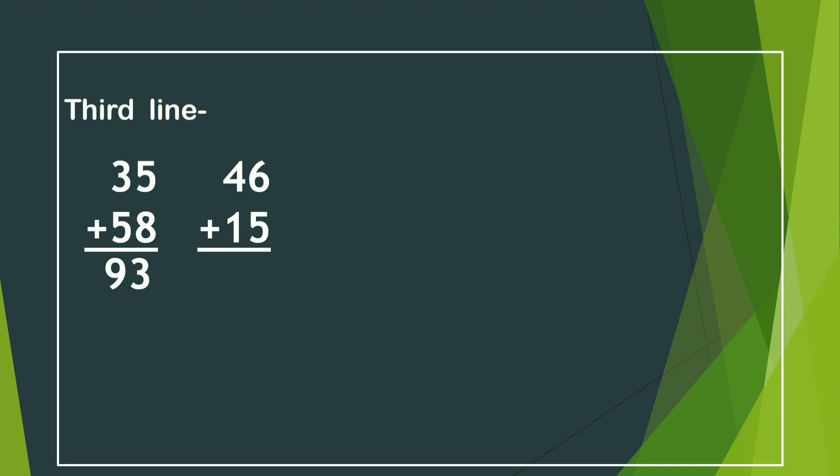Next, 46 and 15. We count after 6 up to 5, which gives 11. We write only 1 after the 5, and the other 1 is added with our left side: 4 and 5 is 9, and 9 and 1 is... wait — 4 and 1 is 5, and 5 and 1 is 6. So our answer is 61.